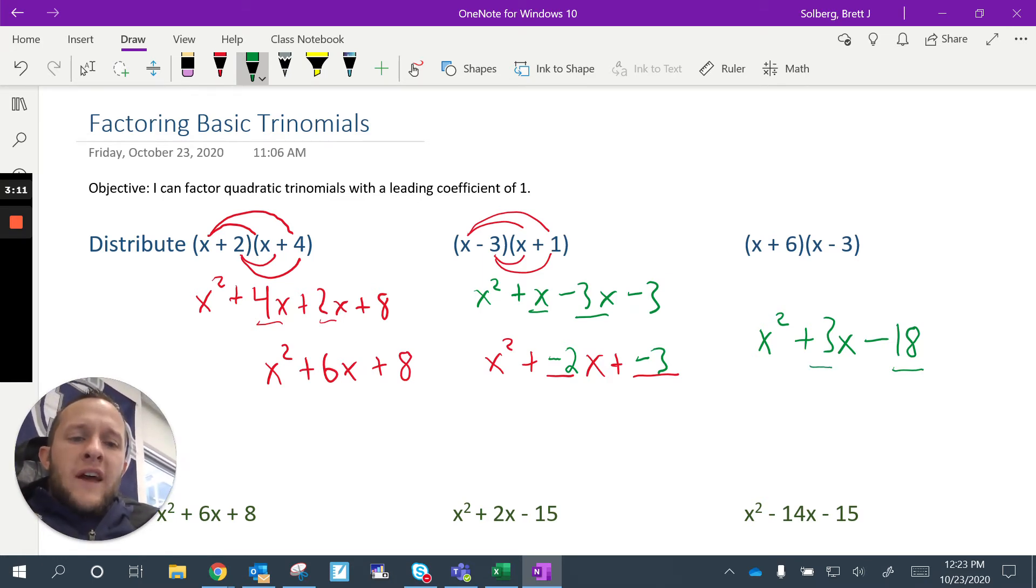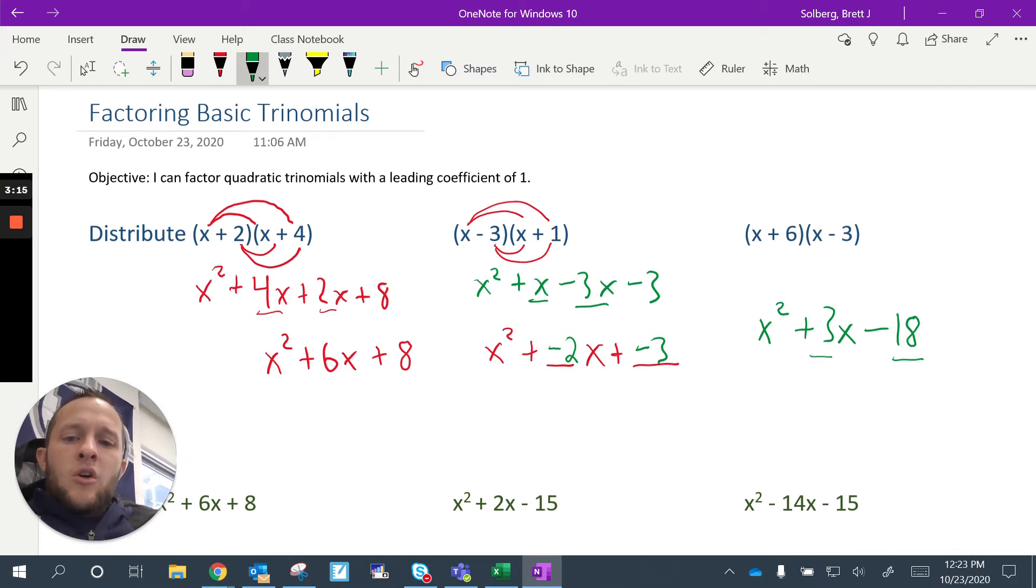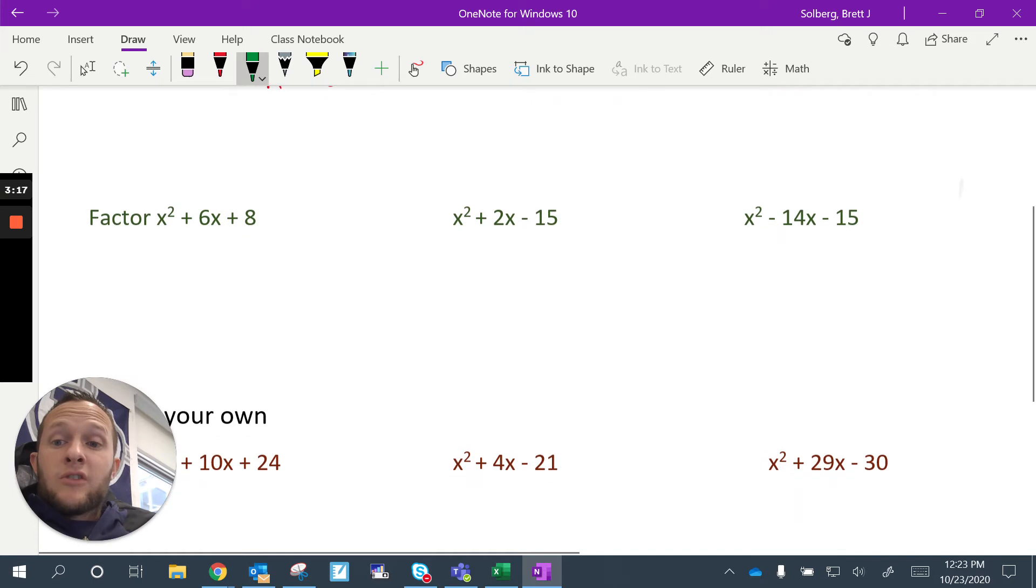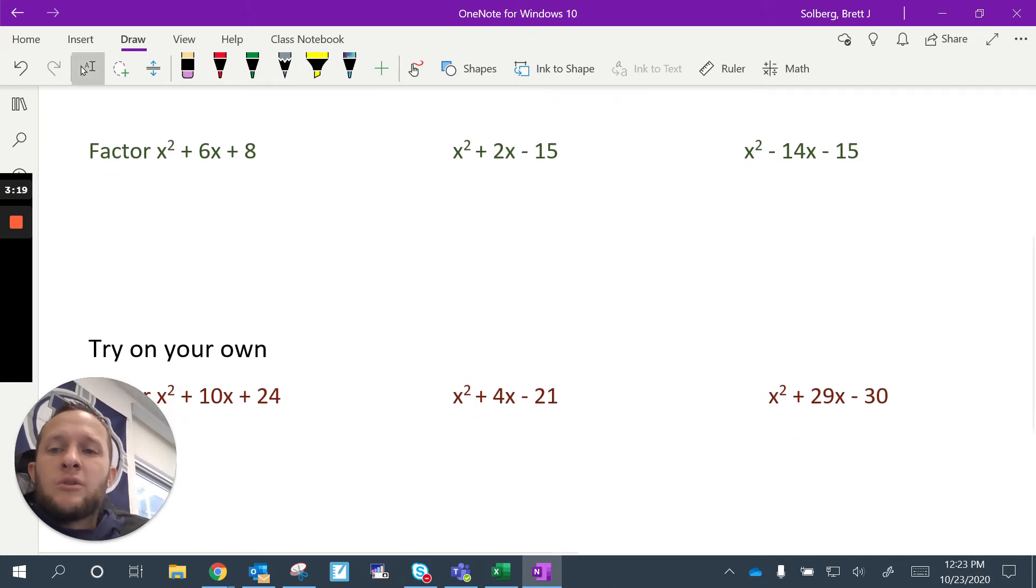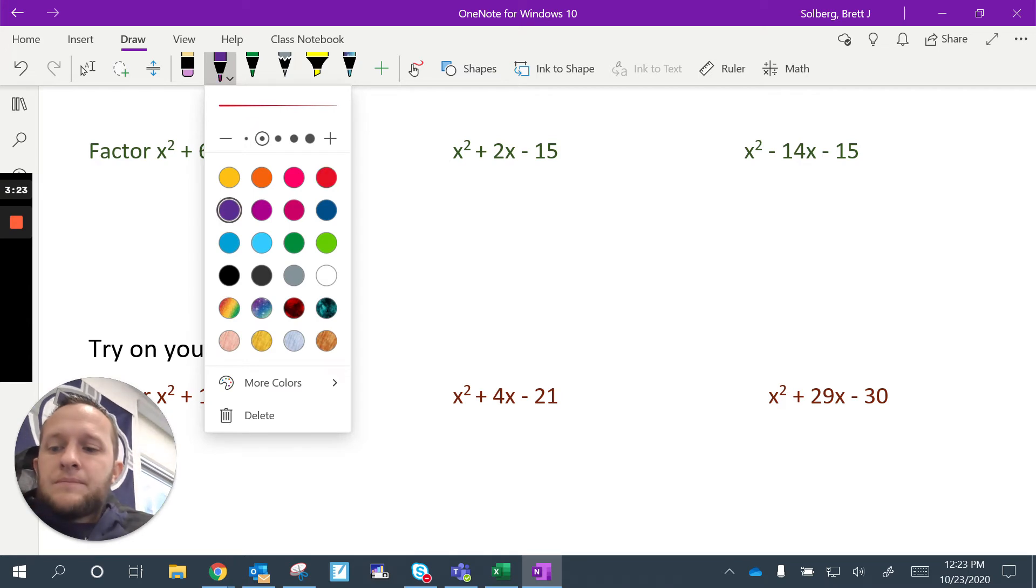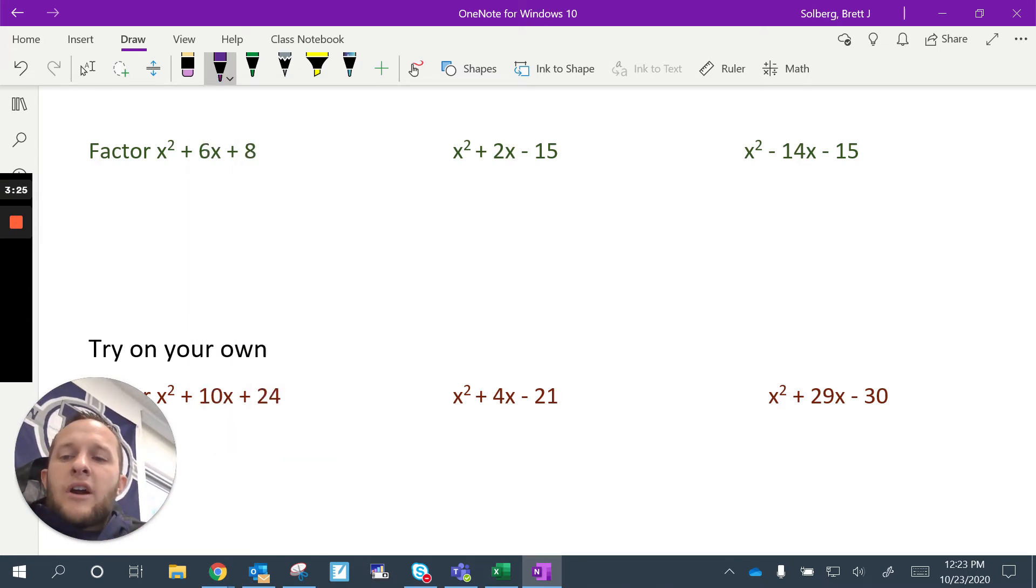Now, the reason why I'm going over that is because that's going to be important for us to know that relationship when we are factoring, which is the opposite of distributing. So let's come down and let's look at a couple examples here. So here, I want to factor x² plus 6x plus 8. To do that, I'm going to put it into parentheses like this. And since it's x² to begin with, I know there's an x here and an x there.